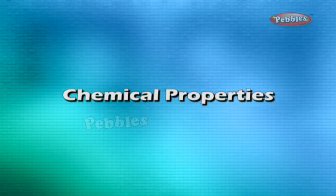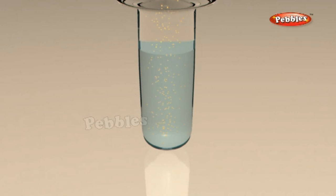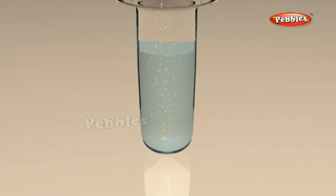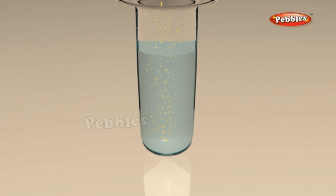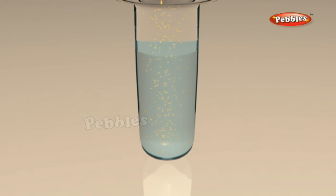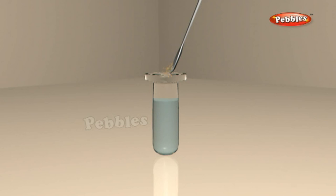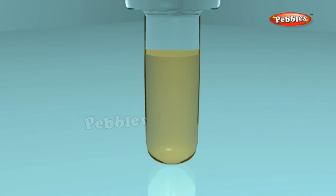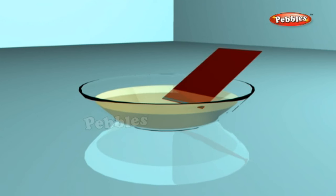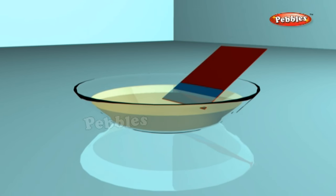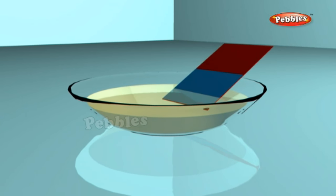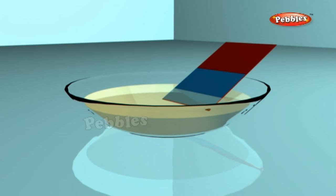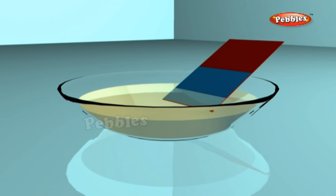Chemical properties: Collect a spoonful of rust and dissolve it in a very small amount of water. You will find that the rust remains suspended in water. Shake the suspension well and test the solution with red and blue litmus papers. It turns red litmus blue, which means it is basic in nature.